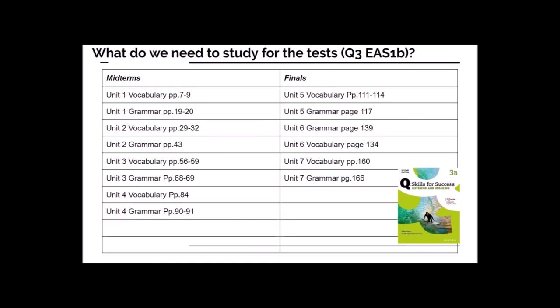This slide is about the information with regards to midterms and finals. If we haven't done the midterms yet, please look at this slide and check out the pages and units that need to be covered. For the midterms, units 1, 2, 3, and 4 are covered — vocabulary is on pages 7 to 9 and grammar on pages 19 and 20. For the finals, we are doing units 5, 6, and 7, and all the pages for grammar and vocabulary are outlined there.